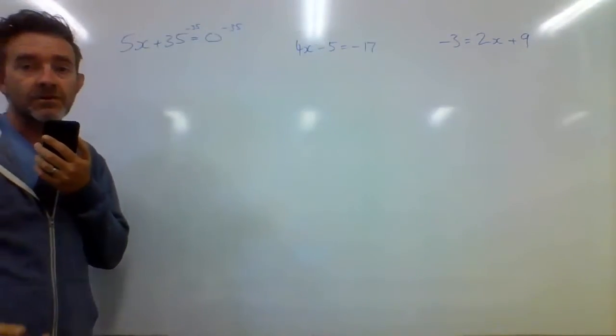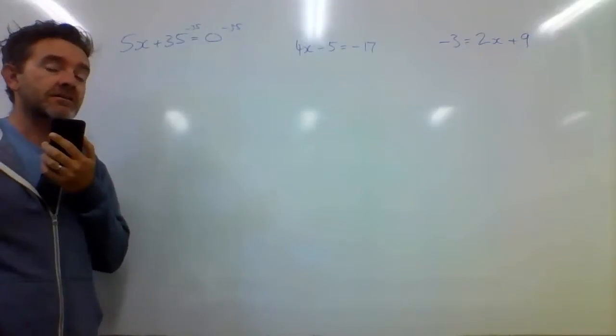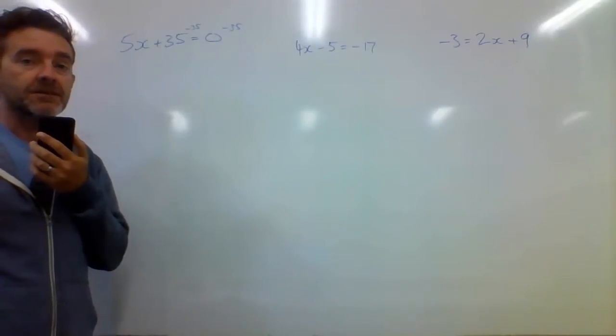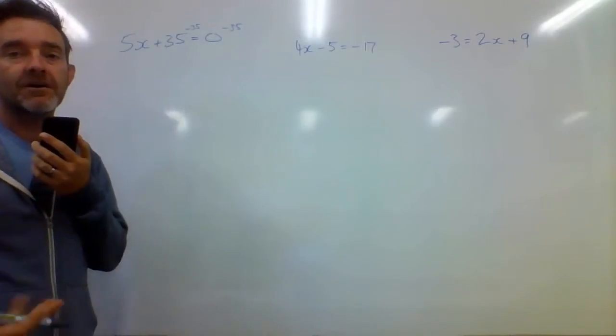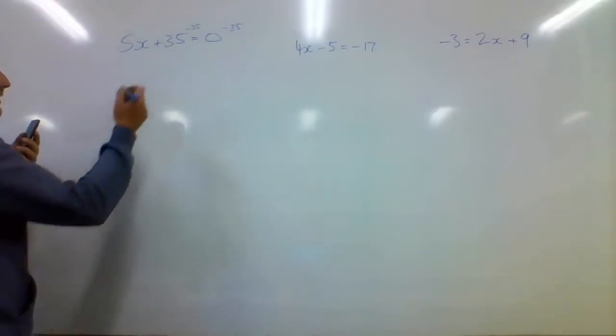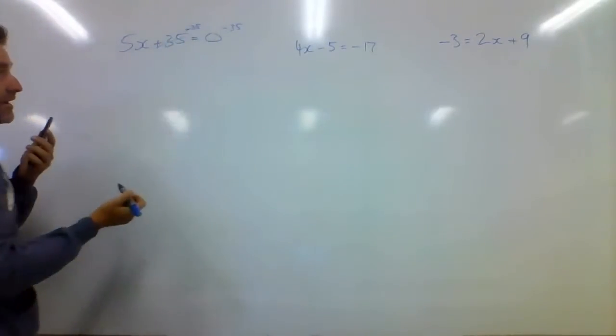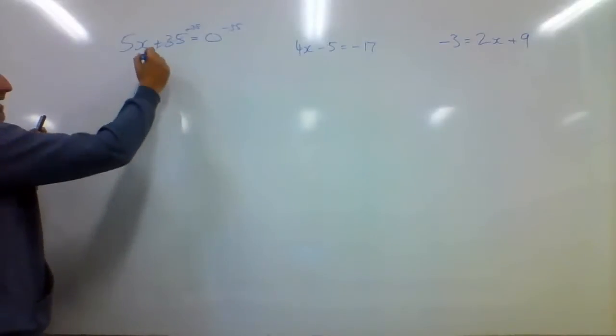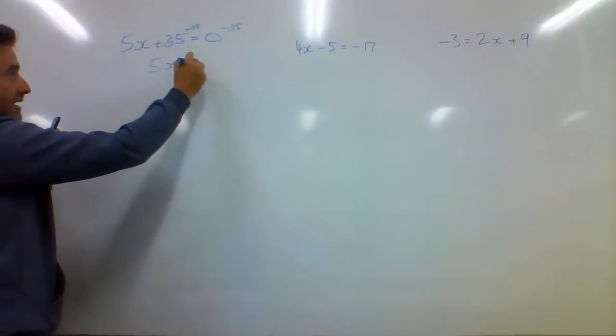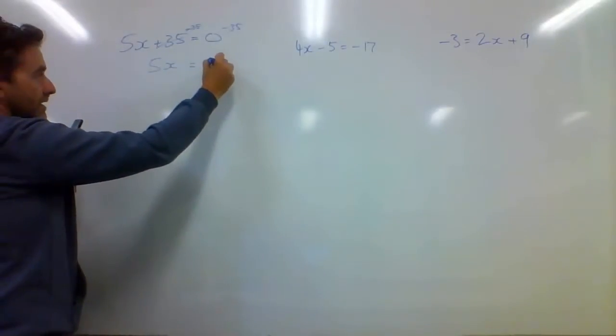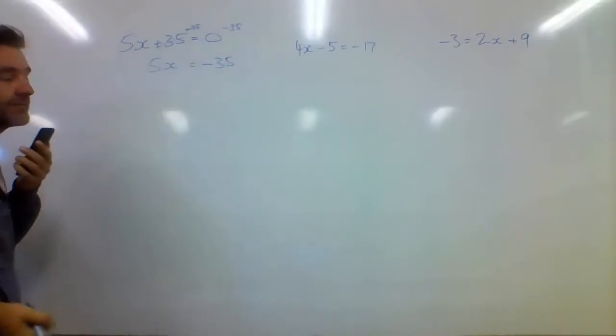And this kind of notation where I'm writing the little things above it might not be the accepted best practice or whatever, but I find that it helps for me. So I've got a positive 35 and a negative 35, they cancel each other out, and I'm left with 5x being equal to negative 35 because 0 take 35 is negative 35.